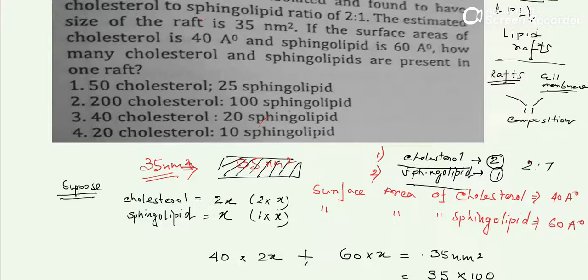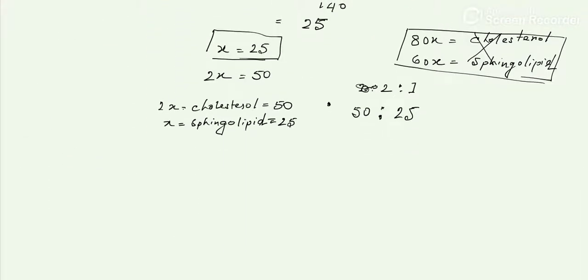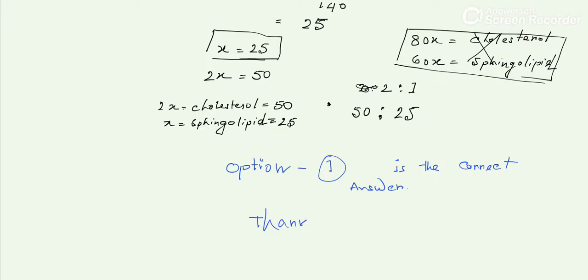Looking at the answer options: option one is 50 cholesterol and 25 sphingolipid, option two is 200 cholesterol and 100 sphingolipid, option three is 400 cholesterol and 20 sphingolipid, and option four is 20. We can easily say that option one is the correct answer. Thank you for watching this video, please click the like button and subscribe to my channel.